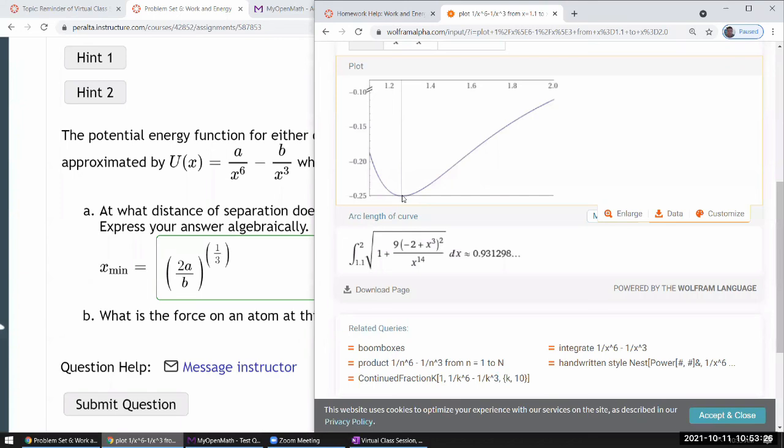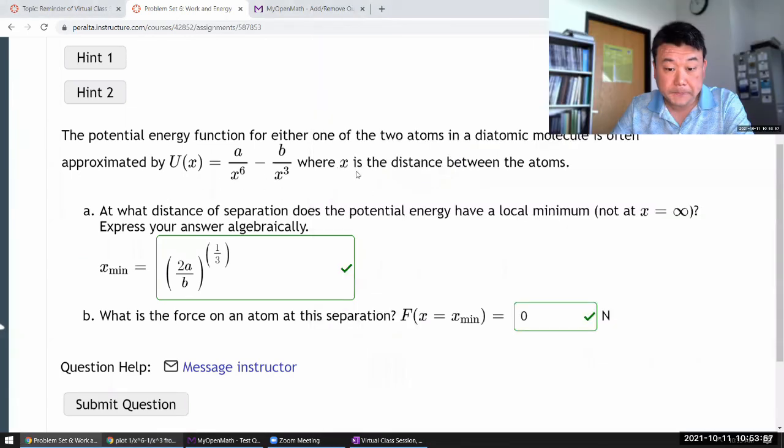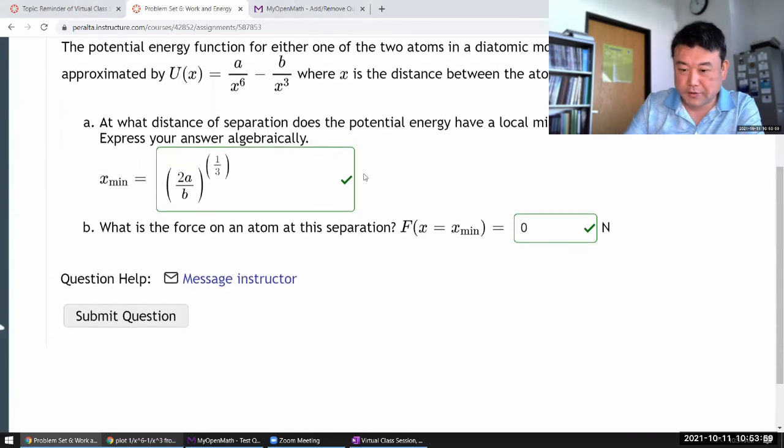When you treat them as one force and you describe the potential energy of the combined force, you are naturally going to find the minimum of that combined potential energy where you have the new equilibrium. Because at equilibrium position, when you are dealing with restoring forces, at equilibrium position is where you will have minimum potential energy and zero net force. So yeah, I really wanted to do this question.